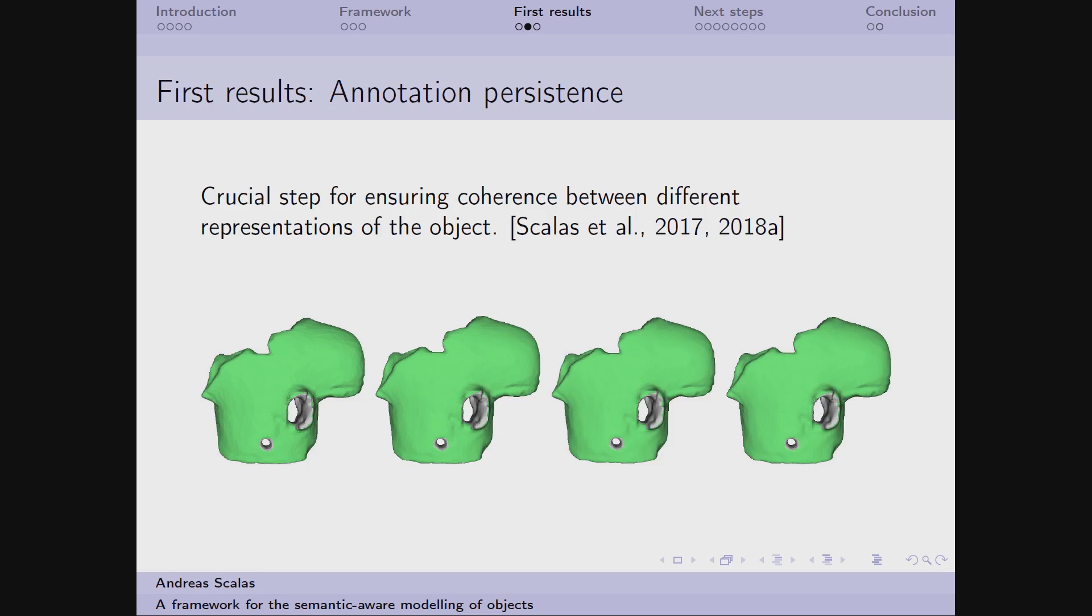So in this work I address the change of resolution issue, and here I define an annotation as a couple composed of a geometric selection that is a mesh subset and some information of any kind. I designed and implemented an algorithm for transferring an annotation from a source mesh onto a target mesh representing the same object.